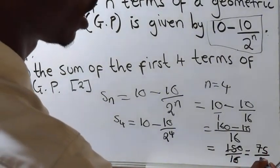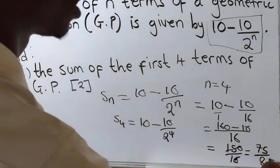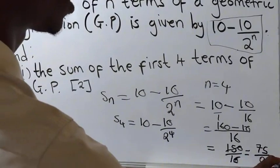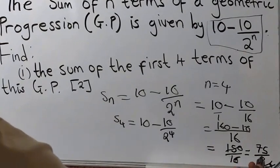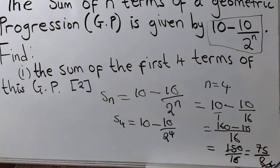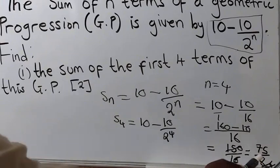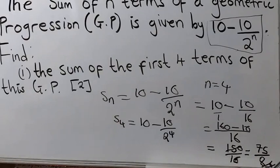So this is the final answer. The sum of the first four terms is 75 over 8. Let's proceed to the next part.